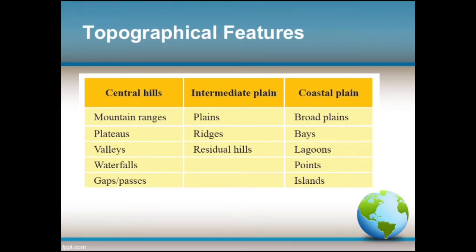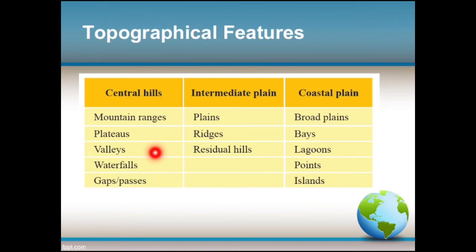Examples for mountain ranges: Knuckles, Pidurutalagala, and Namunukula. Plateau is a flat land area located at a high elevation — examples include the Kandy Plateau and the Welimada Plateau. Valley is a low area of land between hills or mountains, typically with a river or stream flowing through it.